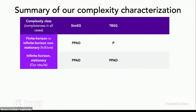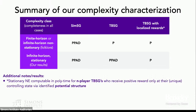Just to wrap up, we have essentially a complete complexity characterization for the case of stationary Nash equilibria. Stationary equilibria in simultaneous games are no harder than non-stationary equilibria — the problem remains in PPAD. But unfortunately for TBSG, there is a fundamental separation between the non-stationary case and the stationary case. In certain cases, we were able to show polynomial time results, but under a strong assumption: each of the N players receives a non-negative reward only at their own state. We also have a relatively simple algorithm to compute stationary equilibrium in polynomial time in the number of actions per state.